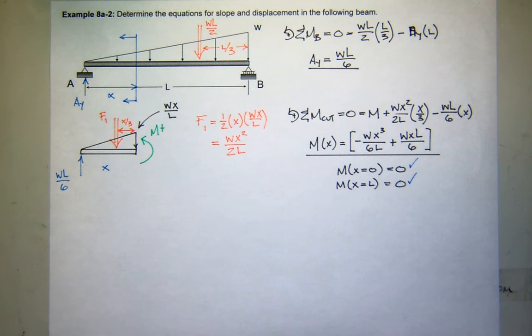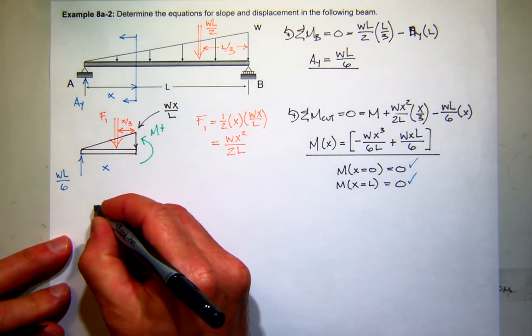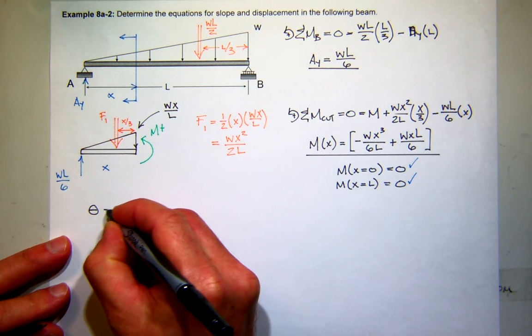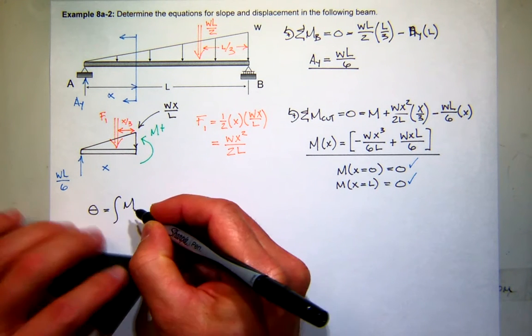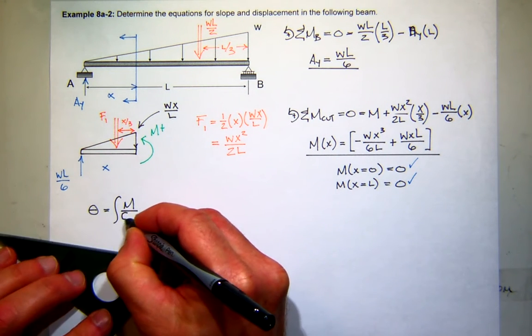All right. So what do we do now? I have my moment equation. What do we do? Does anybody know? Buehler? Buehler? Huh? Ms. Munoz, you were saying something. What were you going to say? Derive it. Derive what? The moment equation. We have the moment equation. What do we do with it? We integrate it. We integrate it. So remember, the first integral, if I want to know the slope, it's the integral of M over EI. So let's do that.